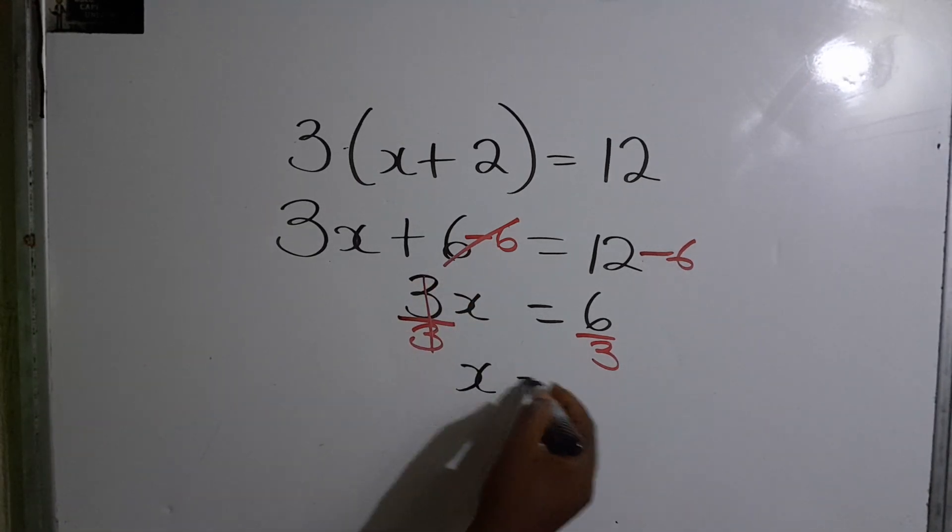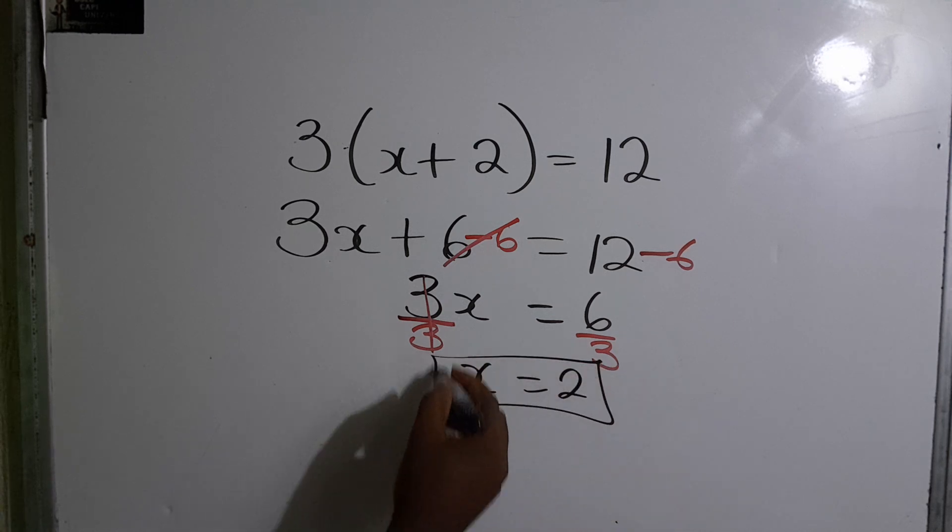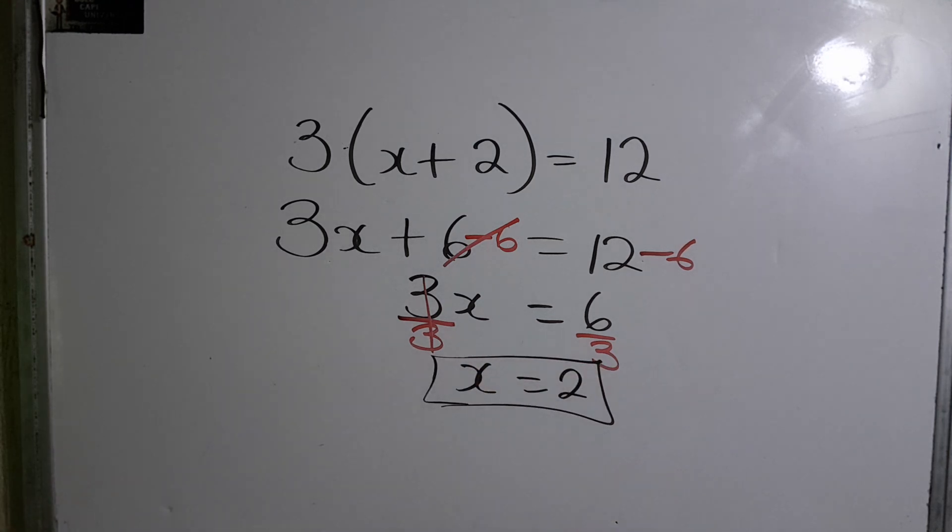The final step is to divide both sides by 3 since we are multiplying. So therefore, x is equal to 6 divided by 3 which is 2. So the value of x is 2.